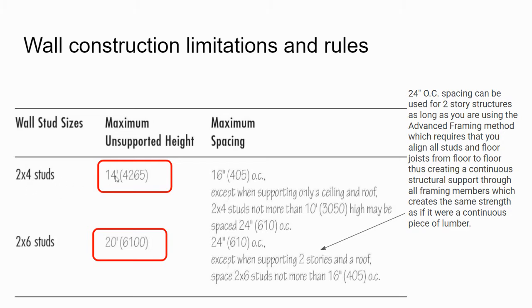Using 2x4 studs, about 14 feet tall is the maximum ceiling height according to the book. Spacing should be 16 inches on center, except when supporting only a ceiling and roof — then you can push to 24 inches on center, but shouldn't exceed 10 feet tall. This scenario works for a garage: uninsulated, supporting just a roof, using 2x4s with walls no more than 10 feet, spaced 24 inches on center.